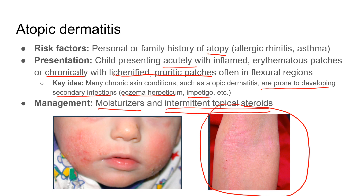Management for atopic dermatitis is moisturizers, and on NBME exams more often intermittent topical steroids. In clinical practice, moisturizers are most important — atopic dermatitis is called 'the itch that rashes': itching starts in a spot, a rash appears, it gets more itchy, the patient continues to itch, the rash gets bigger in a positive feedback cycle. On the boards, the answer will often be intermittent steroids like triamcinolone.